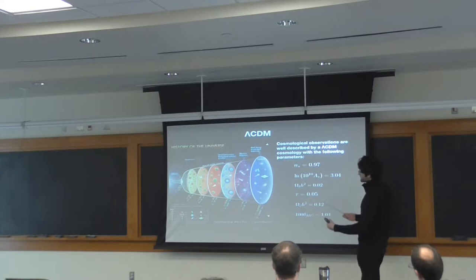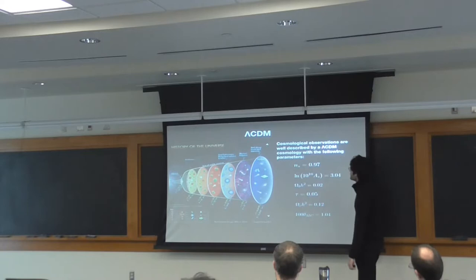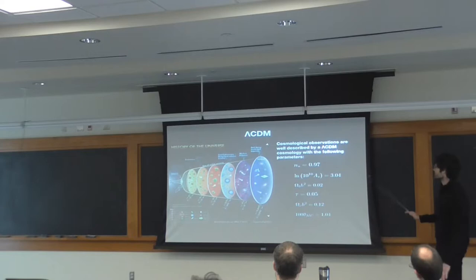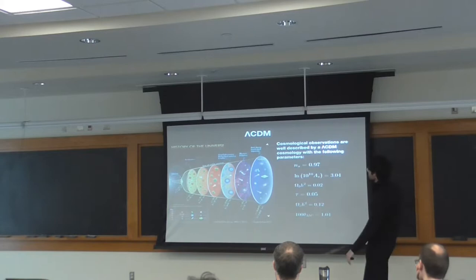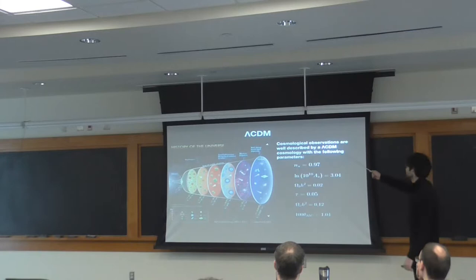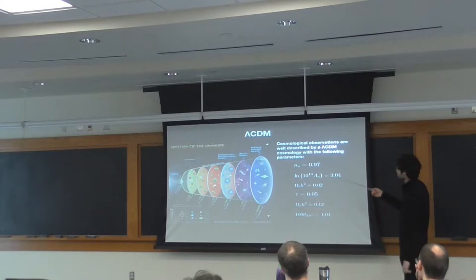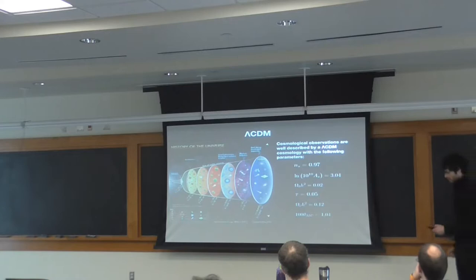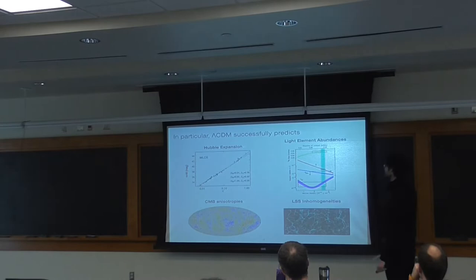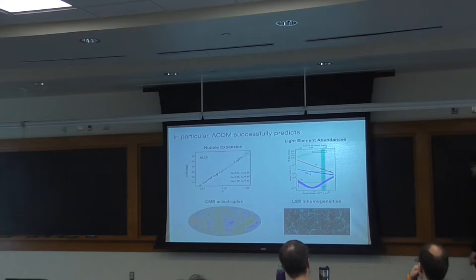After inflation, the universe enters what's known as the standard Big Bang cosmology, also known as ΛCDM. What's remarkable about ΛCDM is that all cosmological observations to date, up to maybe this Hubble tension, are well described by ΛCDM, which is fixed by the following six parameters: the primordial spectral tilt, the amplitude of the initial curvature fluctuations, the energy densities of cold dark matter, the optical depth of reionization, and the angular acoustic scale. Just six parameters describe a plethora of cosmological phenomena, ranging from the expansion of the universe, the relative abundances of light elements such as helium and deuterium, the anisotropies in the cosmic microwave background, and the inhomogeneities we see in the large-scale structure.